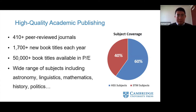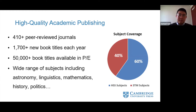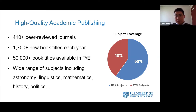Now let's look at our publishing content. We currently have over 410 peer-reviewed journals, including some fully open access journals, and we publish about 1,700 new book titles each year. Currently we have over 50,000 book titles available in print or electronic versions. We have wide subject coverage — about 60% of our content focuses on humanities and social sciences, and the other 40% on STM subjects.